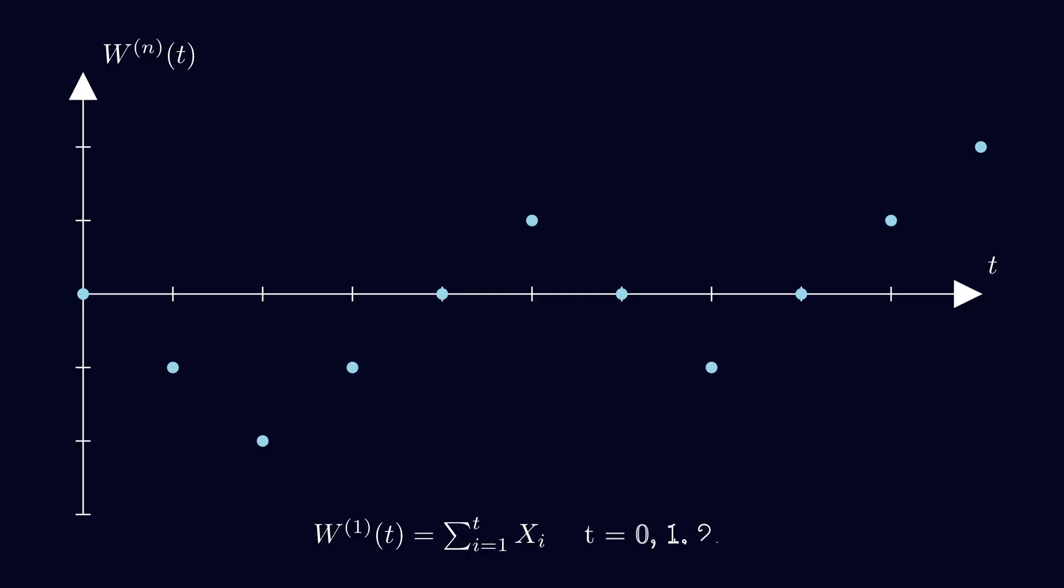This is where we introduce the idea of a scaled random walk. The idea here is instead of flipping a coin every second, we can do it much more frequently, let's say every half a second. Now, instead of having values at 0, 1, 2, 3, we have values at 0, 0.5, 1, 1.5, 2, and so on. And another thing that you can notice is that we are scaling it down by the square root of 2. We will get into why we use the square root in just a bit.